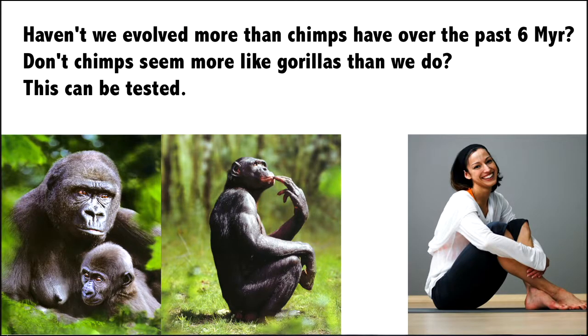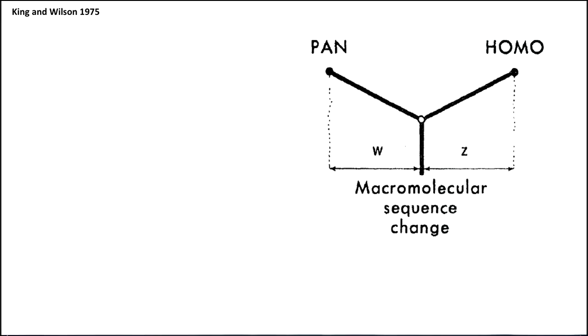Now people ask haven't we evolved more than chimps over the past six million years, don't chimps seem more like gorillas than we do? Well we're scientists, this can be tested. And when people tested it in the beginning about 40-50 years ago they found by looking at the blood and other proteins that homo, that's us, and pan, those are chimps, have evolved from the common ancestor about the same amount. So w is equal to z.